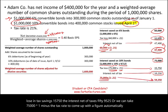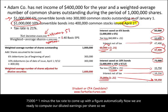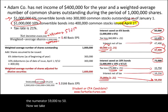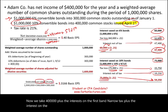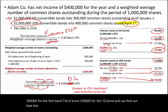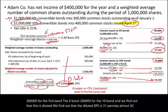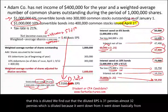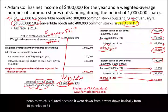Now we are ready to compute diluted earnings per share. The numerator is $400,000 plus $47,400 plus $59,250. The denominator is 1 million plus 300,000 plus 300,000 = 1.6 million. The diluted EPS is approximately 31 cents, which is indeed diluted because it went down from 40 cents to about 31 cents. This is how we convert a bond for diluted EPS.